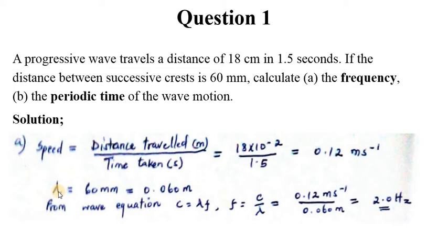So lambda which is the wavelength is given as 60 millimeters. Dividing by 1,000 to get to meters you'll end up with 0.060 meters. So from the wave equation c equals lambda f, by rearranging we get f equals c over lambda. And c we have as 0.12 and lambda is 0.060. Dividing this using any tool you end up with 2.0 hertz. That is the frequency.